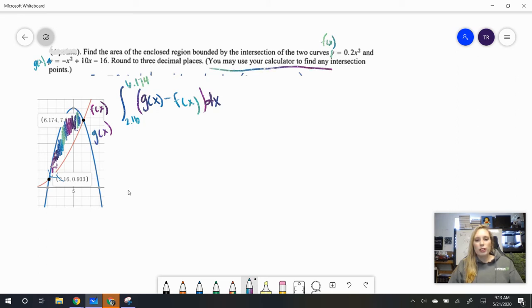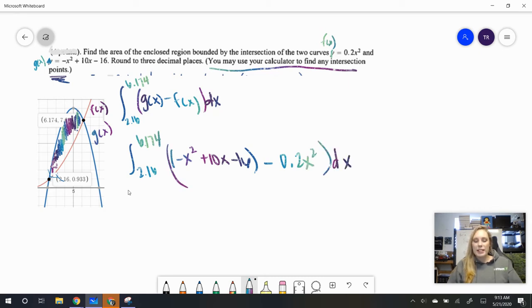It says you can use your calculator for any intersection points, but it does not say use your calculator for the actual integration. So let's start working out this problem. We are going to integrate from 2.16 to 6.174. G of x is negative x squared plus 10x minus 16, and then we subtract 0.2x squared, and we integrate this all with respect to x.